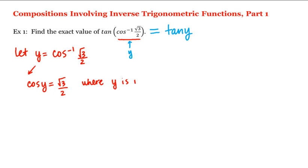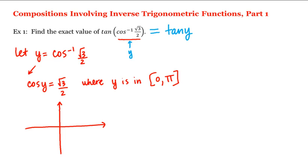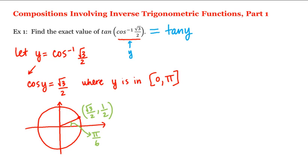Y is in the interval from zero to pi. Remember that when computing inverse cosine values, our answers must lie in this interval zero to pi. Thinking of our unit circle and remembering that cosine is the x-coordinate of the point of intersection of the terminal side of the angle and the unit circle, we know that the terminal side of pi over six intersects the unit circle at (√3/2, 1/2). Therefore the cosine of this angle is √3/2, and it's the only angle in this interval whose cosine equals √3/2. That is, y equals pi divided by six.